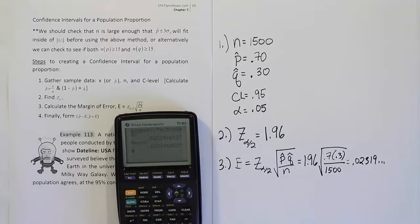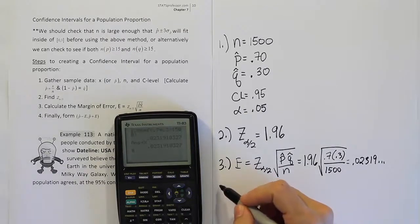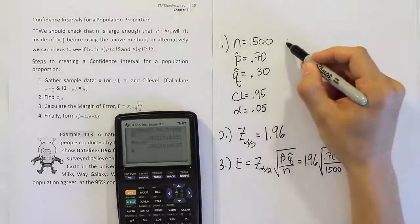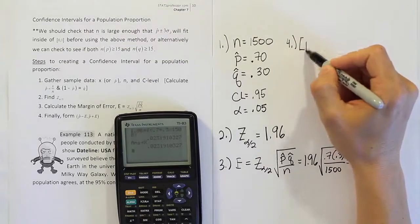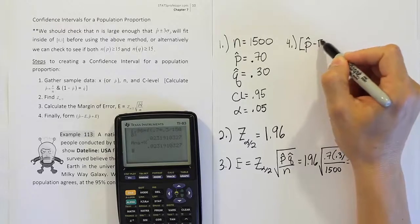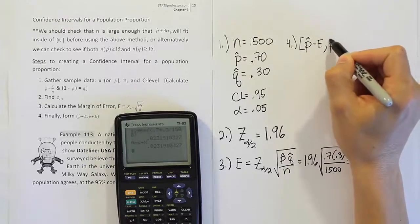And then from there, we're going to take that value and add and subtract it to our sample proportion. This is very familiar from what we've done before in the past. So, we'll say that we're looking at p-hat minus e, p-hat plus e.